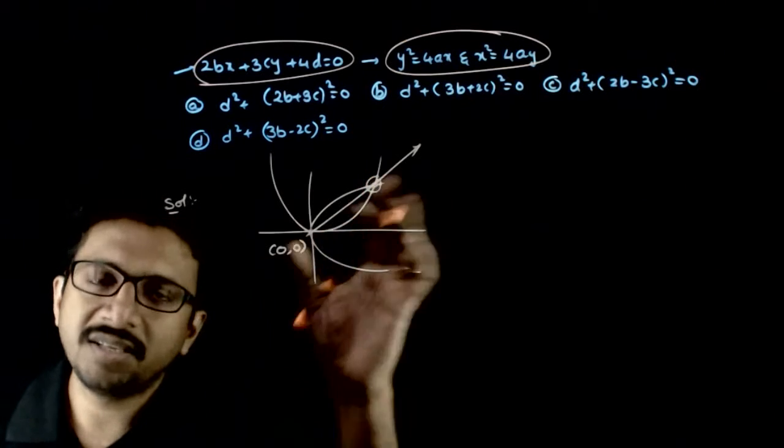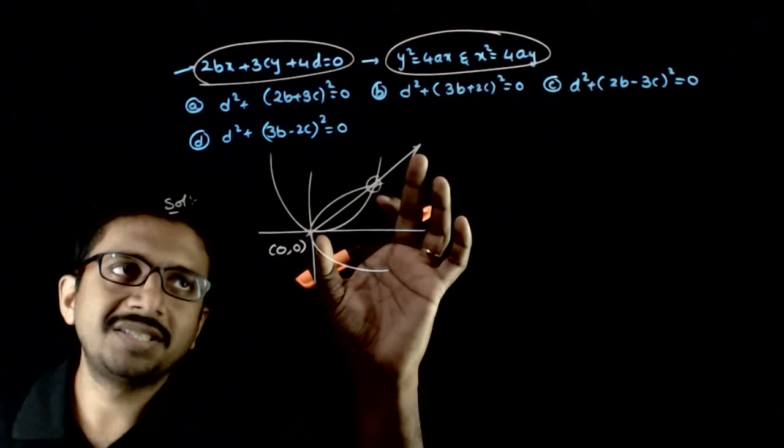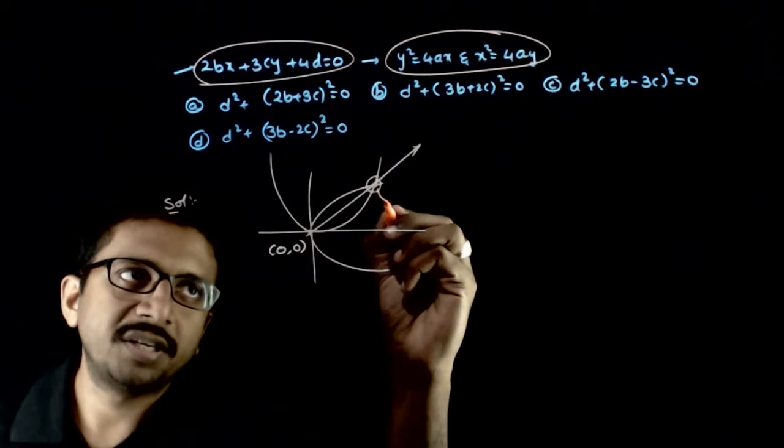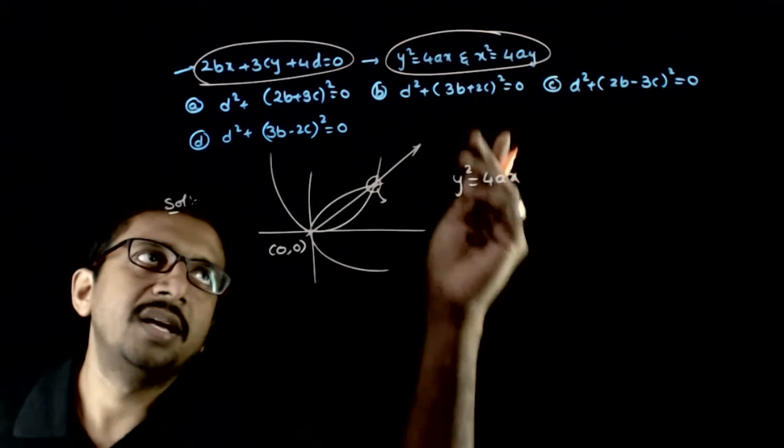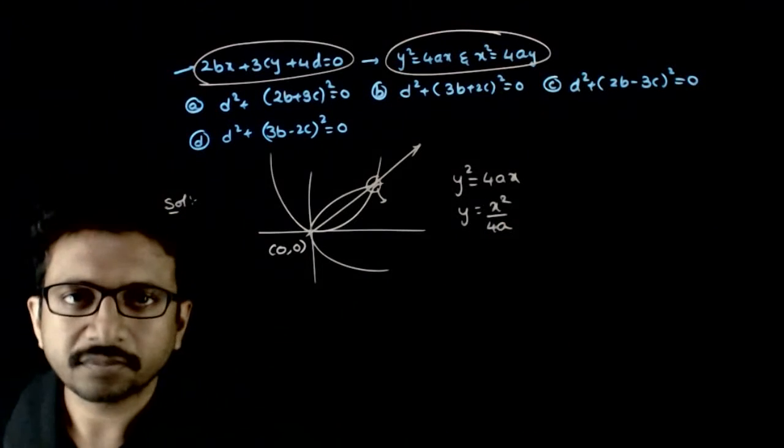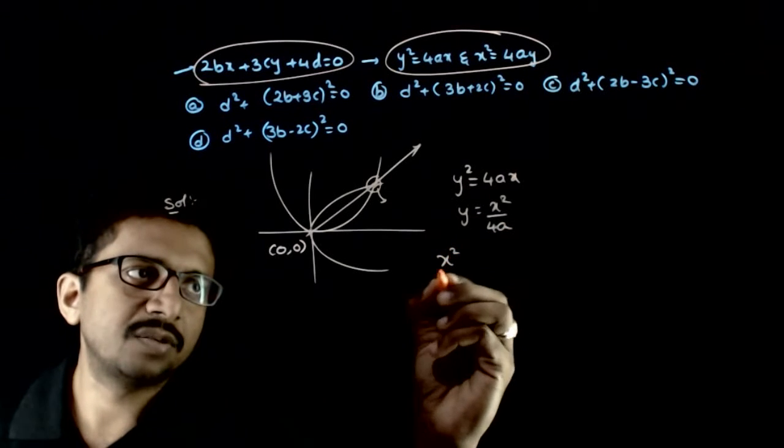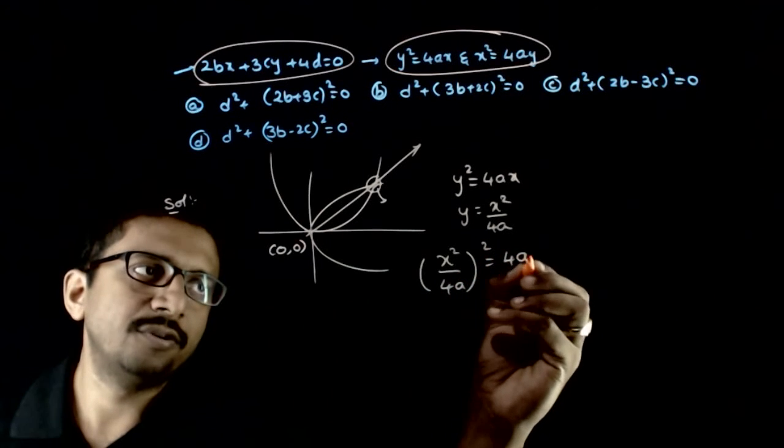Now, if I find this point, I can find the equation of this line and equate it to this line. So how do I find the point of intersection? y squared equals 4ax and from the second equation, y equals x squared by 4a. This implies x squared by 4a whole squared equals 4ax.